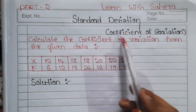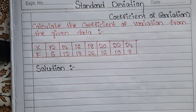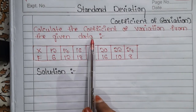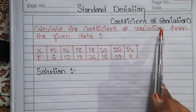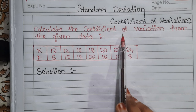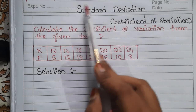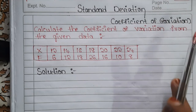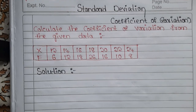So let's get started. The topic is standard deviation and its coefficient of variation. You can see a question on your screen: calculate the coefficient of variation from the given table. Whether they ask for coefficient of variation or coefficient of standard deviation, you first need to calculate standard deviation, and only then can you proceed to the coefficient or coefficient of variation.